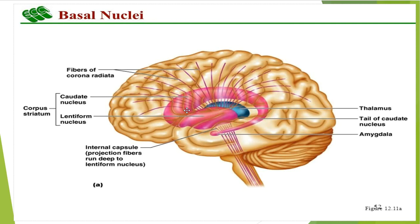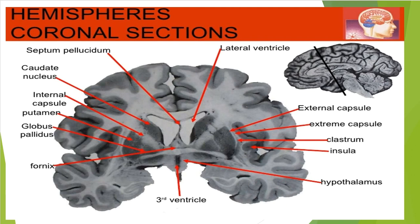The basal nuclei are represented by the corpus striatum, the claustrum, and the amygdaloid body. Here we can see the amygdala, and in the coronal section of the hemisphere we can see the claustrum.